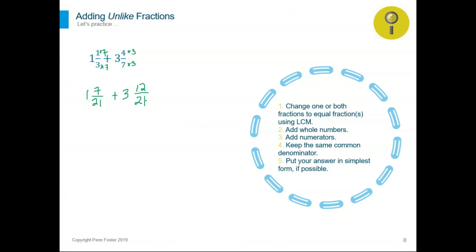We now have two fractions with the same denominator. In this case, we just go ahead and add the whole numbers and add the numerators, then keep the denominator as is. One plus three is four. Seven plus 12 is 19. The denominator stays the same. And that would be your final answer.